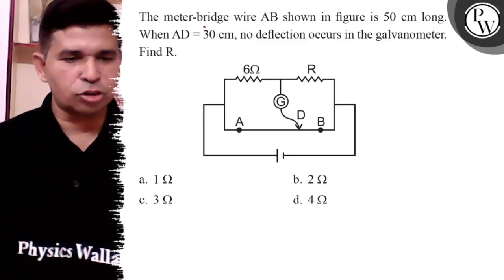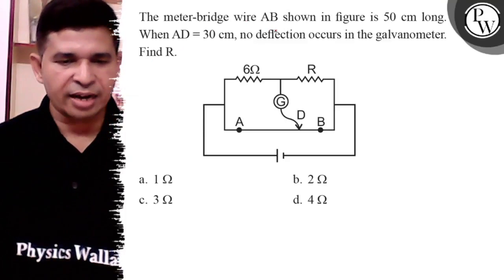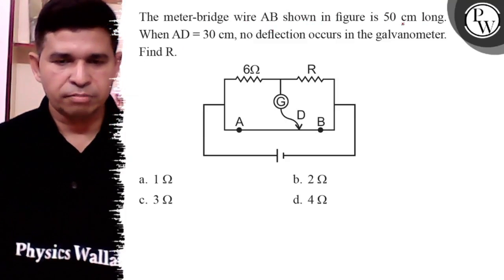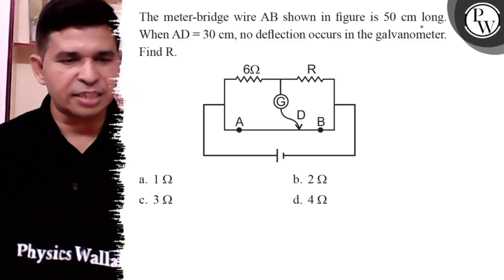Hello Bachyo, let us see this question. The meter bridge wire AB balancing length is 50 cm long.